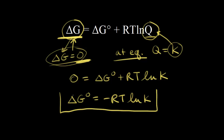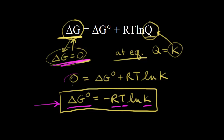So we have another very important equation: delta G zero is the standard change in free energy, or the change in free energy under standard conditions. R is the gas constant, T is the temperature in Kelvin, and K is our equilibrium constant. When using this equation, you're at equilibrium and delta G equals zero. The equilibrium constant tells us whether we have more products or more reactants at equilibrium, and this equation relates K to delta G zero, the standard change in free energy.